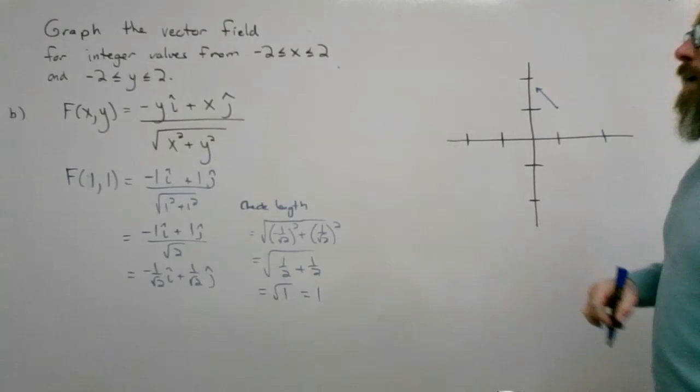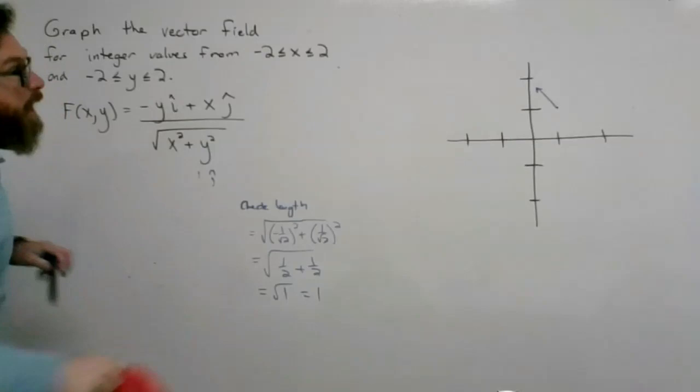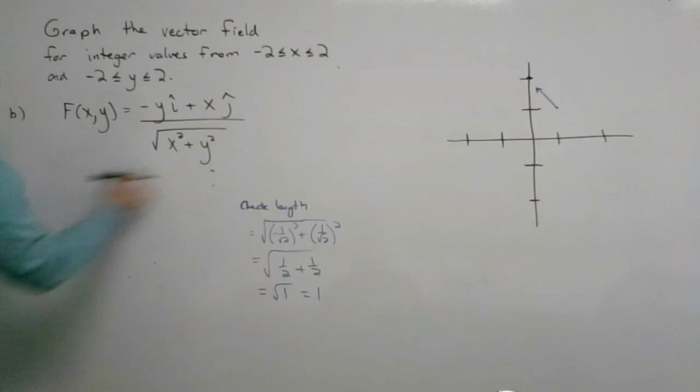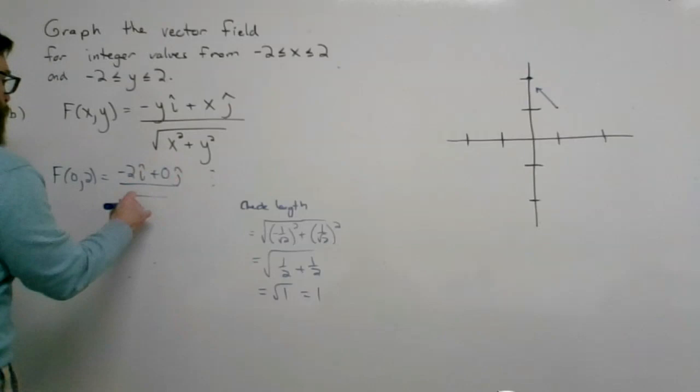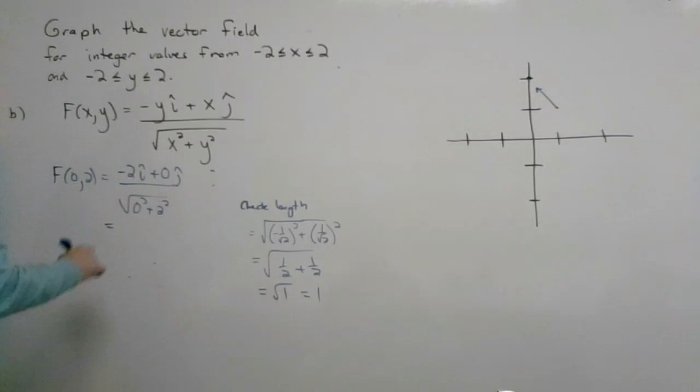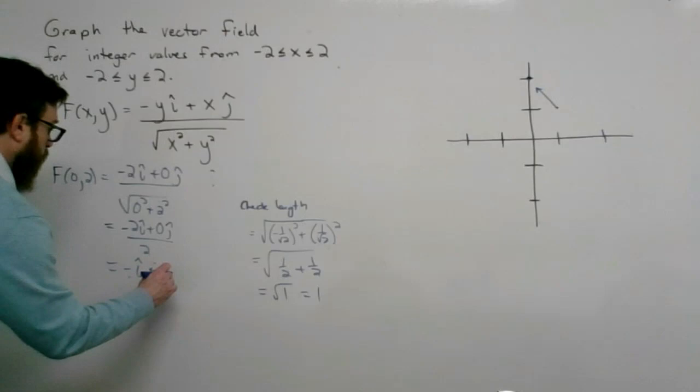For the point (0, 2), x is 0 and y is 2. So that gives y = 2, x = 0, all over √(0² + 2²). The denominator is 2, giving -2i + 0j all over 2, which is -i + 0j. You can see it moves in the negative x direction with length 1.